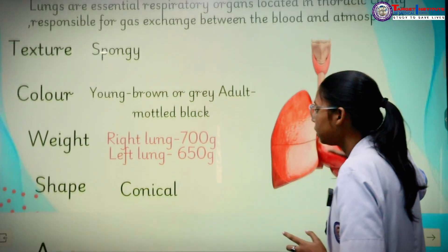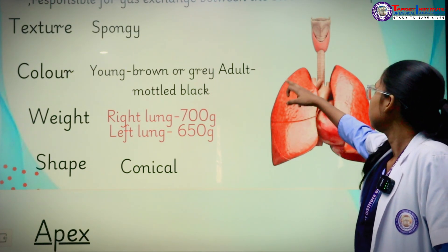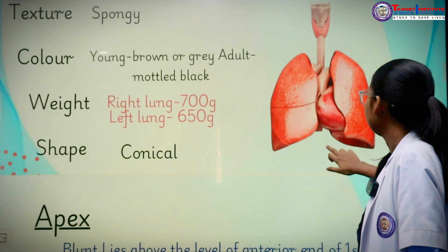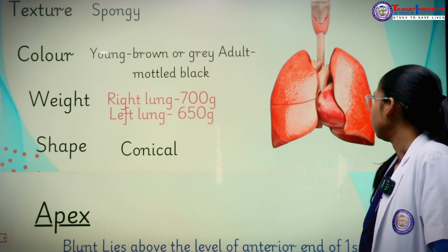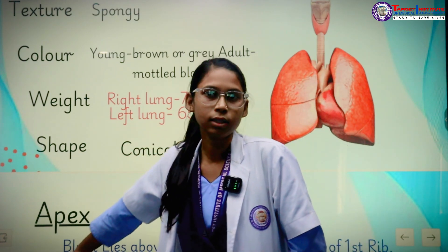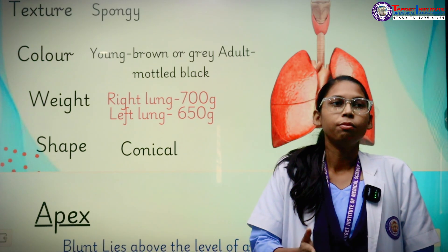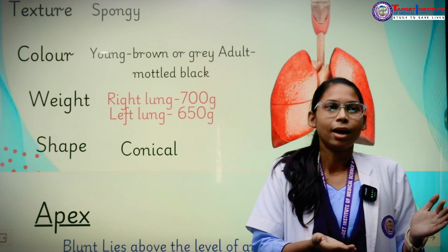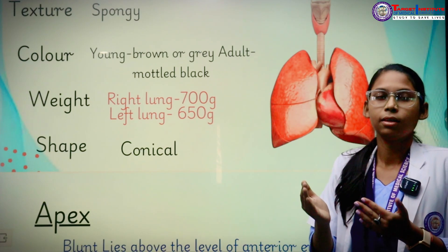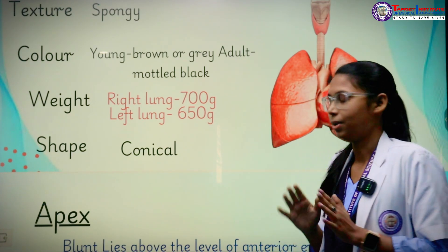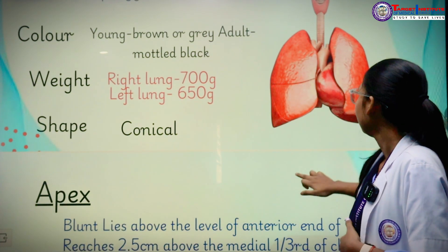The shape of the lungs is conical — not completely conical, but it looks like a cone. Both lungs hold the heart between them and provide protection to it. This is the reason why the left lung weighs less than the right lung — because the heart is present on the left side, occupying the space that would otherwise be provided for the left lung.